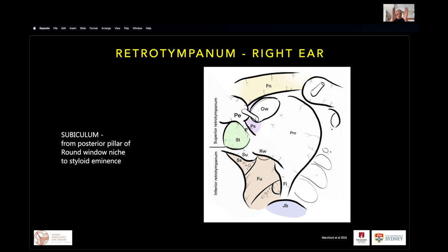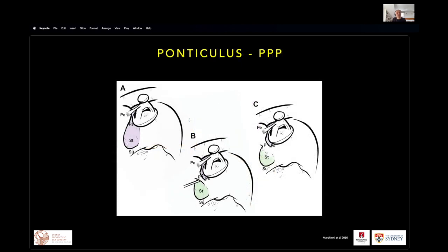Now let's move our eyes from the epitympanum towards the posterior part of the middle ear — the retrotympanum — a very important surgical anatomy area with a high rate of residual cholesteatoma left behind by the surgeon. The way to systematize the retrotympanum is to subdivide it into a superior and an inferior retrotympanum. This is done by the subiculum, which travels from the posterior pillar of the round window to the styloid eminence — the posterior part of the middle ear — superiorly subtending the superior retrotympanum and inferiorly the inferior retrotympanum.